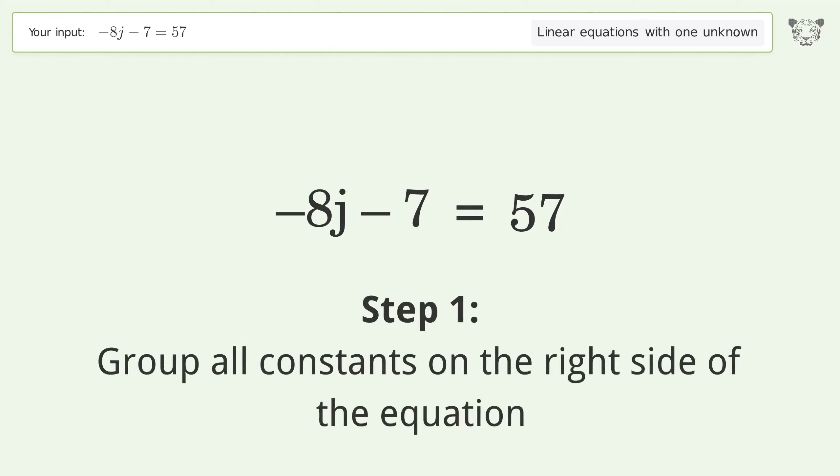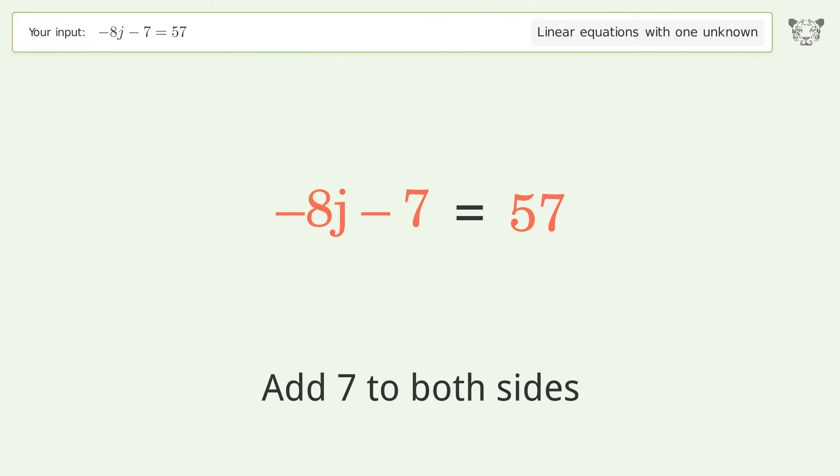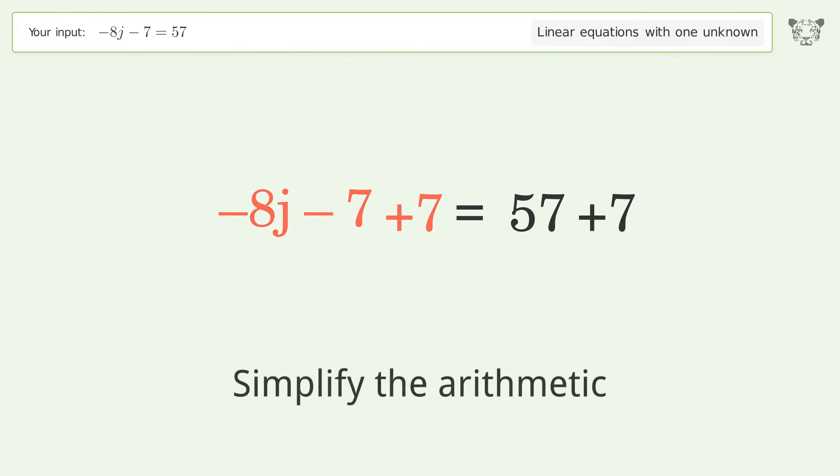Group all constants on the right side of the equation. Add 7 to both sides. Simplify the arithmetic.